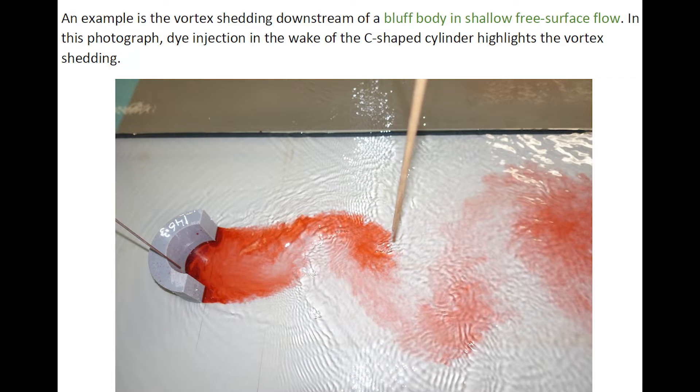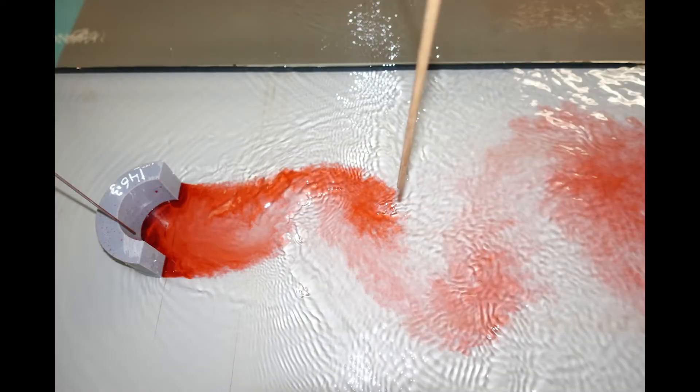An example is the vortex shedding downstream of a bluff body in shallow free surface flow. In this photograph, dye injection in the wake of a C-shaped cylinder highlights the vortex shedding. The vortices are shed alternately resulting in a pattern of large-scale vortices in the downstream wake.